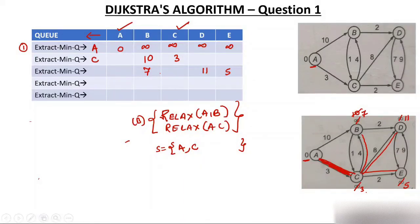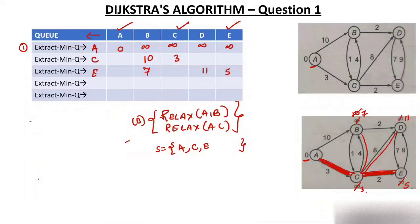Extract minimum again — E is minimum with value 5. Extract E and add to S. Make the edge dark. Find adjacent of E: only D is adjacent. Relax: 5+9=14, but D is already 11. 14 is not less than 11, so no relaxation needed. After extracting E, there is no change. Remaining nodes are B=7 and D=11.